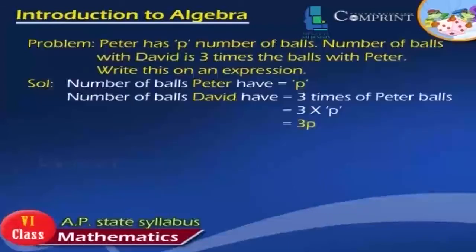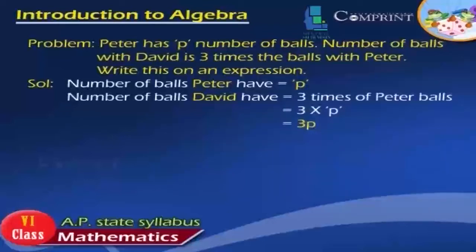Problem: Peter has P number of balls. The number of balls with David is 3 times the balls with Peter. Write this as an expression. Solution: Number of balls Peter has = P. Number of balls David has = 3 times Peter's balls = 3 × P = 3P.